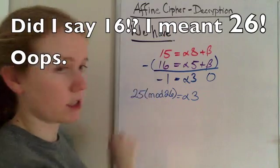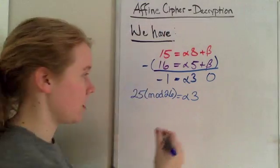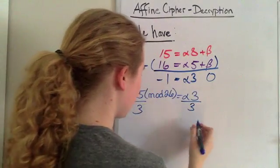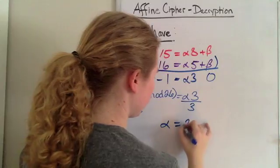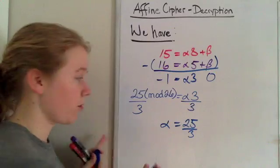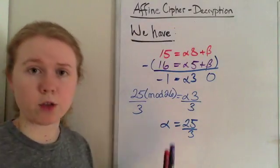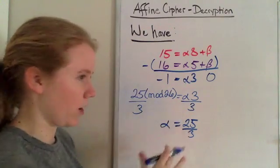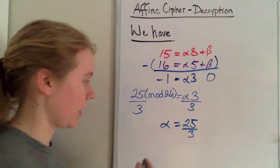So I added 26 to my negative 1 and I got 25. Next to solve it, we want to divide both sides by 3. So then we have alpha equals 25 over 3, which I'm going to rewrite because, you know, modular arithmetic and the affine cipher, we can't just divide and get a fraction or a decimal or something like that.